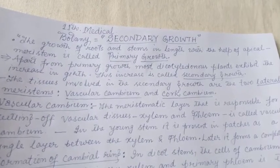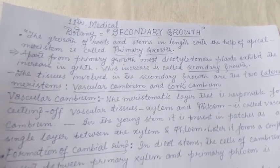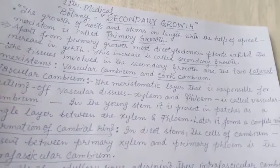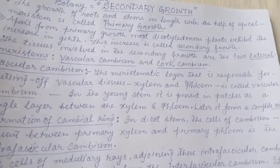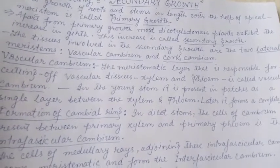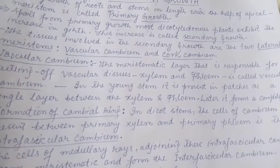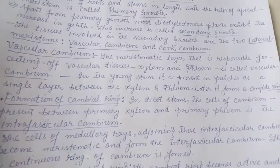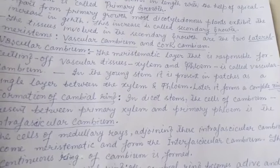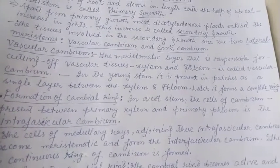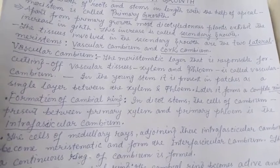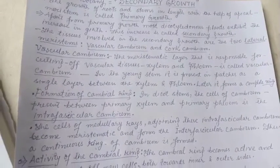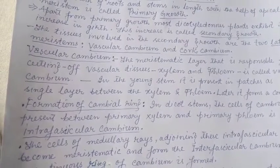The vascular cambium is the meristematic layer responsible for cutting of vascular tissues — xylem and phloem. In the young stem, it is present in patches as a single layer between xylem and phloem. Later, it forms a complete ring — firstly found in patches between xylem and phloem, and later it curves slowly and forms a complete ring.